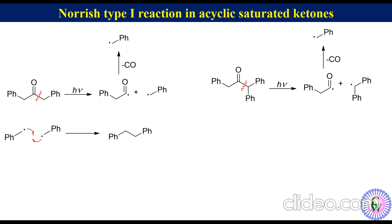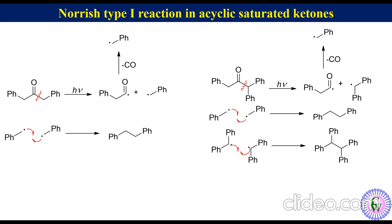There are three possible combinations: two benzyl radicals can combine together to produce 1,2-diphenylethane; two diphenylmethyl radicals can combine together to produce tetraphenylethane; and one benzyl radical and one diphenylmethyl radical can combine together to produce triphenylethane. These products are formed in a 1:1:2 ratio.